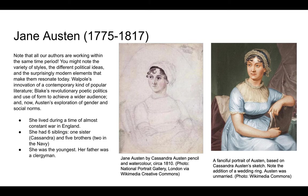Horace Walpole's Castle of Otranto innovated a very contemporary kind of popular literature — gothic literature. William Blake's Songs of Innocence and Songs of Experience offered a kind of revolutionary poetic politics, and he used a very simple childlike form to achieve a wide audience for his politics. And now Jane Austen's novella Lady Susan will do a lot of exploring gender norms and social norms. So these are all quite modern authors in some respects, though their style, of course, is a product of their time.